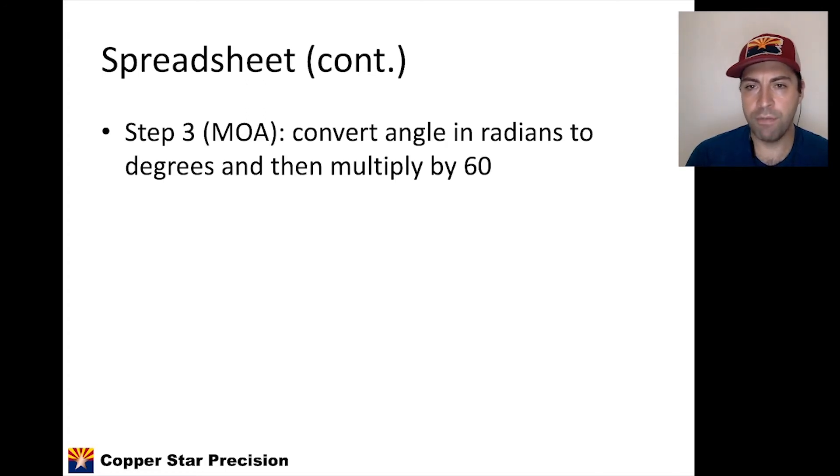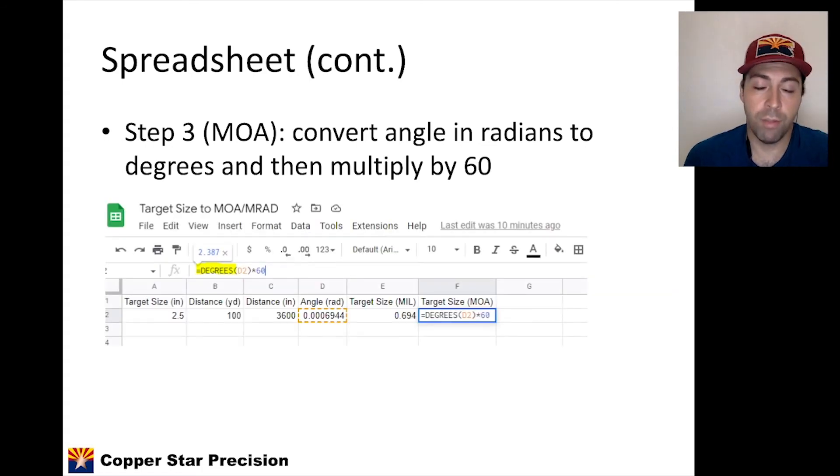To do MOA, we have to convert the result from the inverse tangent function from radians to degrees, and then we multiply by 60 because there's 60 minutes of angle in one degree. So what that looks like is we use another function, it's simply called degrees, pretty self-explanatory. So we take degrees of that angle in cell D, that inverse tangent function result, that converts that radian into a degree measurement, and we multiply that by 60 and find out that the target size here is 2.387 MOA. So the target size is 2.387 MOA or 0.694 mils.